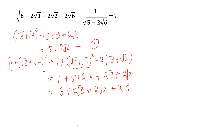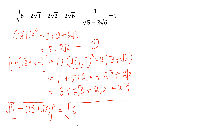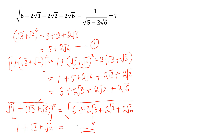Now taking the square root of both sides, we can write: 1 + √3 + √2 = √(6 + 2√2 + 2√6). This is equation 2.